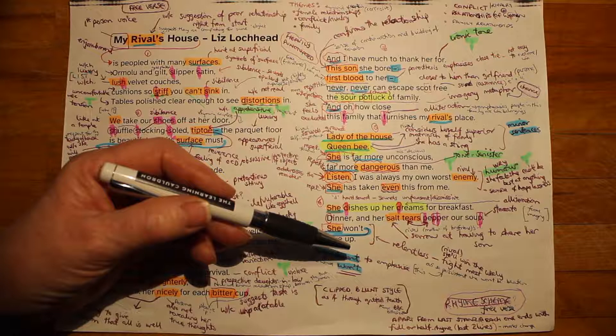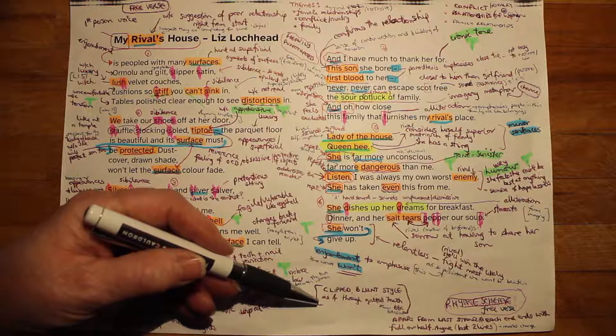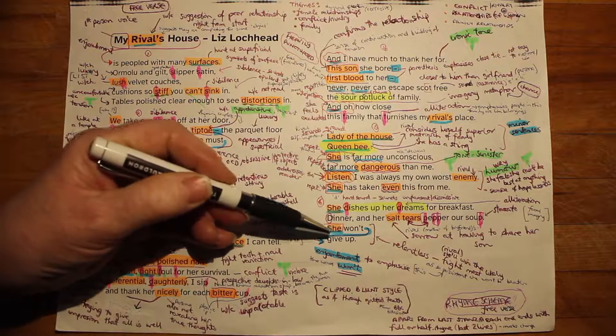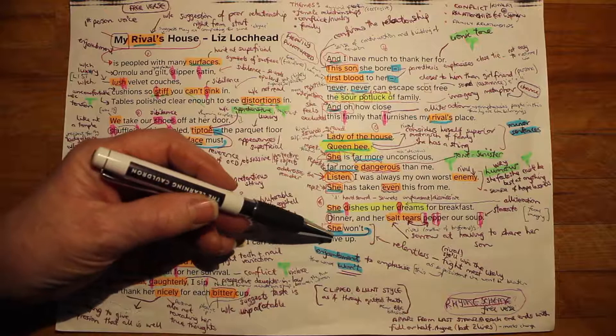Interestingly, the BBC Bitesize resources — well worth checking out — refer to the clipped, blunt style of this poem, noting that it sounds almost in places, for example with 'sip and cup' and 'she won't give up,' as if being spoken through gritted teeth, conveying the sense of frustration and tension in the persona.